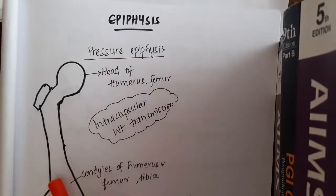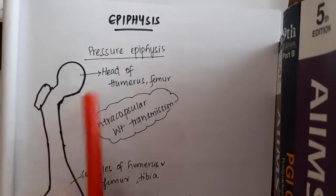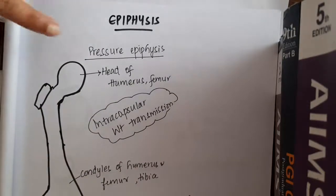These are the long bones. So, these will help in the transmission of weight and they are intracapsular. This is pressure epiphysis.